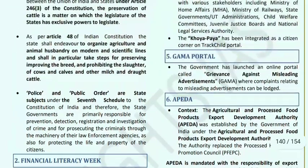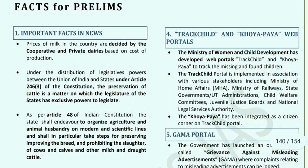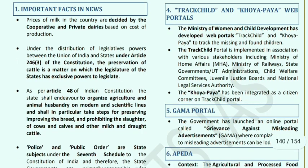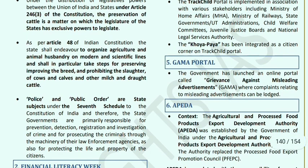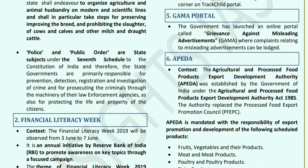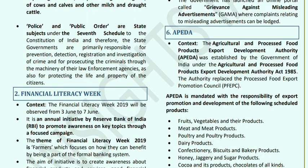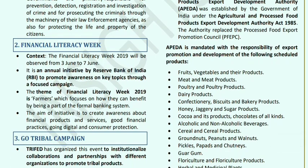Track Child and Khoya Paya web portals: the Ministry of Women and Child Development has made two web portals — Track Child and Khoya Paya — to find missing and found children. The Track Child portal will be implemented with stakeholders including Ministry of Home Affairs, Ministry of Railways, state governments, UT administrations, child welfare committees, juvenile justice boards, and National Legal Services Authority. Khoya Paya has been integrated as a citizen corner on the Track Child portal. GAMA portal stands for Grievance Against Misleading Advertisements. APEDA (Agricultural and Processed Food Products Export Development Authority) was established under the APEDA Act 1985, replacing PFEPC (Processed Food Export Promotion Council), and mandates the responsibility of export promotion and development of scheduled products.